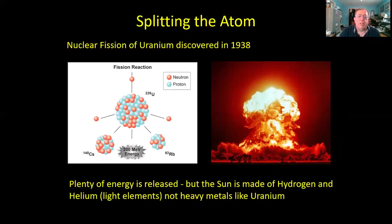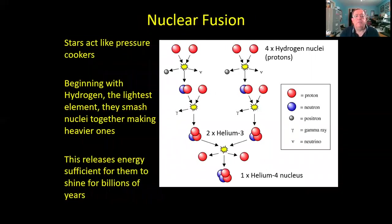A slightly different process was required: nuclear fusion, whereby light elements are turned into heavier ones. Stars act like pressure cookers, taking hydrogen—the most common element in the universe—and smashing the nuclei of hydrogen together. A hydrogen nucleus is simply a proton, a single positively charged particle. We start with four of them, smash them together in pairs to create a two-particle nucleus with one neutron and one proton—a deuterium nucleus—and in the process we get a burst of energy, a positron (an antimatter electron) that will find an ordinary electron and annihilate to give a little more energy, and a gamma ray carrying a lot of energy away.